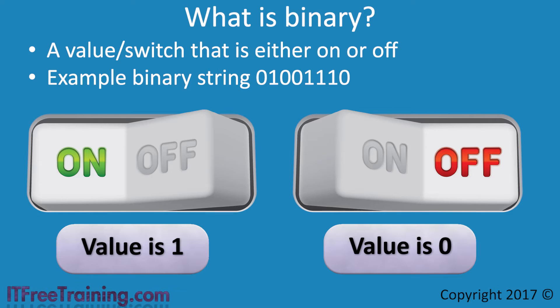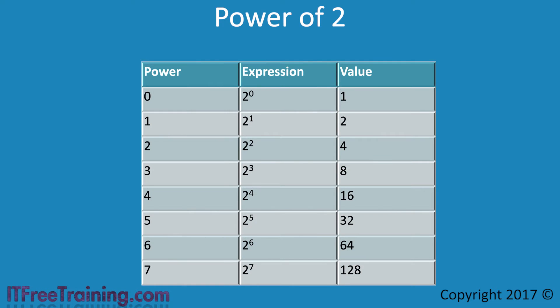Shown here is an example of a binary string. In this example, 8 binary values have been combined together in a string. An individual 0 or 1 is known as a bit, so in this example there are 8 bits in the binary string. The next step to understand binary is how a binary string gets converted to a decimal. To understand this, consider the power of 2 table.